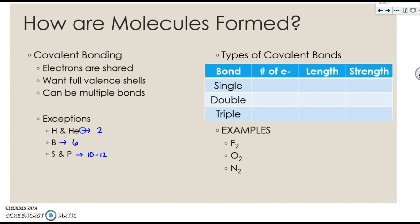Let's kind of talk about the type of bonds. Single bonds are going to be two total electrons. Double bonds will be four, and triple bonds will be six.